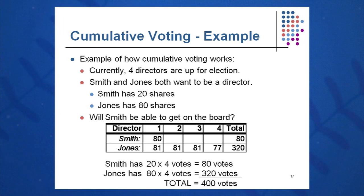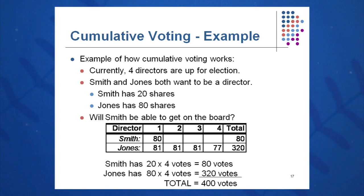Smith has 20 shares to begin with; Jones has 80. Obviously, in straight voting, Jones would win every seat. You elect each director one at a time and it would be 80-20 each time. Jones would win all four seats on the board. Smith has no chance.